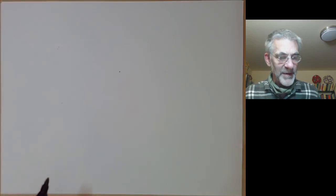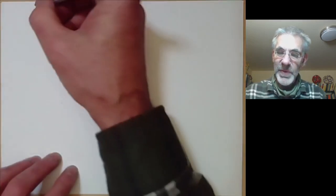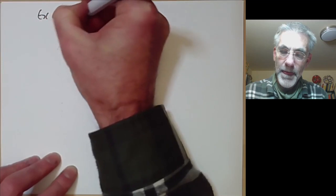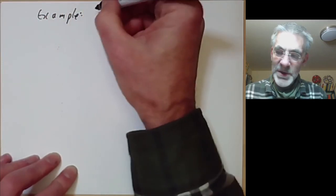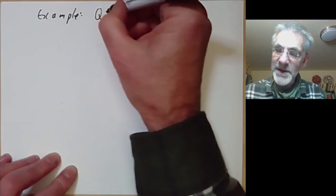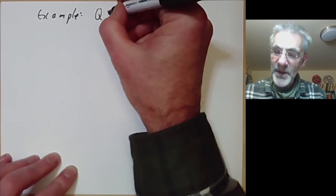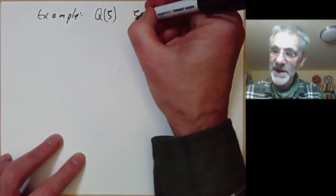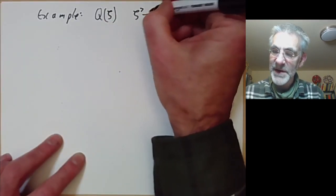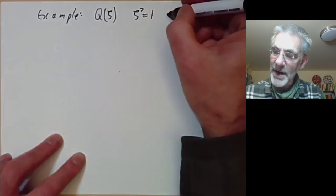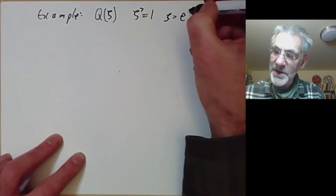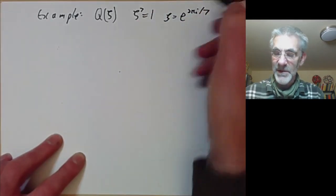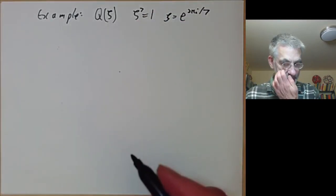For the next example, I'm going to look at the field over the rationals generated by a seventh root of unity, where ζ⁷ = 1 and ζ = e^(2πi/7) or some power of it.